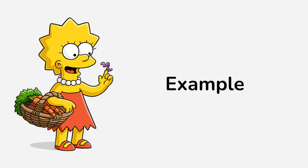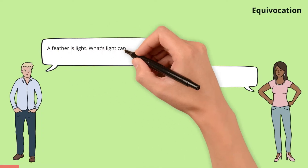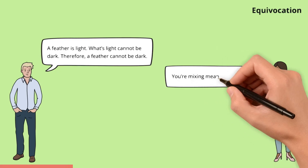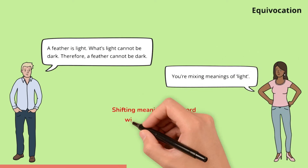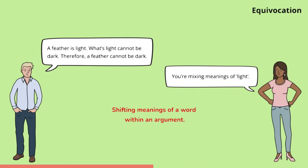Here's a small example. Liam plays on the different meanings of 'light' to make a misleading argument. Zoe clarifies the misuse of the word, spotlighting the need for clarity and definitions.